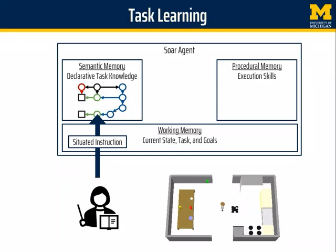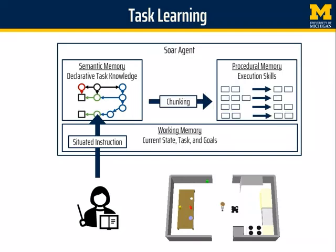As it interprets the structure within the current state, it compiles the task knowledge into procedural rules through SOAR's chunking mechanism. These are then used to efficiently execute the task and are the key to the agent's ability to generalize from a single example.